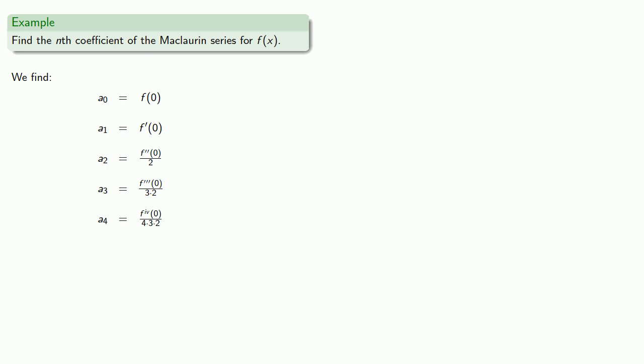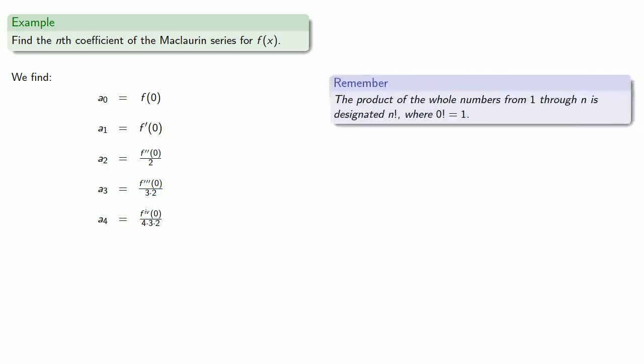Here's a useful bit of notation. Notice that we're getting these products of decreasing whole numbers. The product of the whole numbers from 1 through n is designated n factorial, where 0 factorial is defined to be 1. So this a4 term with denominator 4 times 3 times 2, we can rewrite as 4 factorial. And so a4 is the fourth derivative divided by 4 factorial.